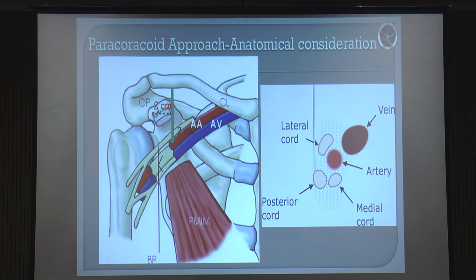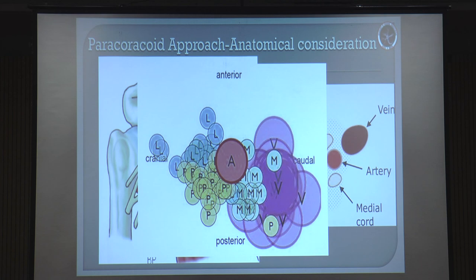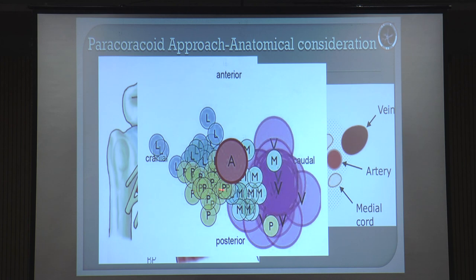This is a very simplified approach, but there are a lot of variations at this level. At the medial infraclavicular space, the anatomical arrangement is the same - it doesn't change. But in the lateral, there are a lot of variations. And if you are unlucky and get a patient whose medial cord is here, whose posterior cord is here, and whose lateral cord is here, then you are having a tough time. In that scenario, ultrasound really helps.